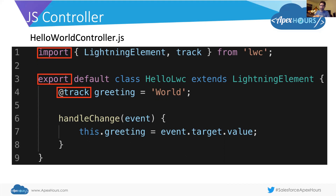Looking at the actual component code, we see our greeting variable again, and we also see the word @track. That @track is called a decorator — we're going to see three of them today. Decorators are essentially an annotation you give a variable to give it some extra properties. In the case of @track, it does two things: it makes the variable private, and it makes it reactive — meaning it'll automatically re-render itself in the UI when it changes. So if you remember in Visualforce we'd tell our button to re-render output when clicked; by @tracking our variable, it re-renders itself automatically. Something cool to note with the Summer 20 release: almost all variables are @tracked automatically now, so we might not see this decorator explicitly as much anymore.